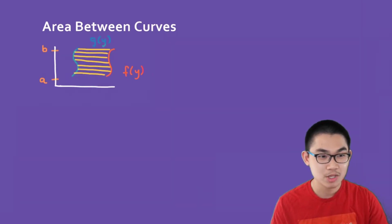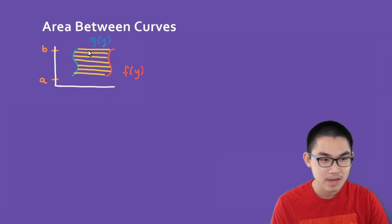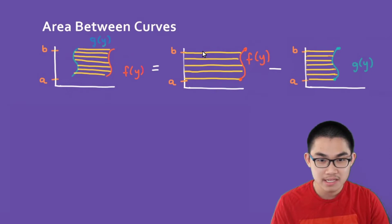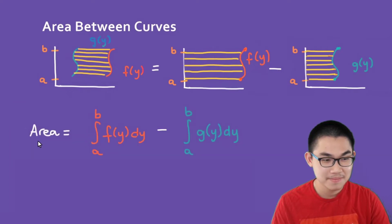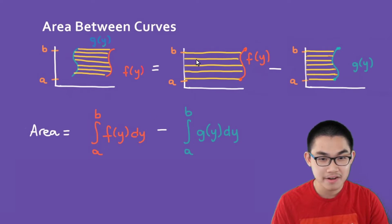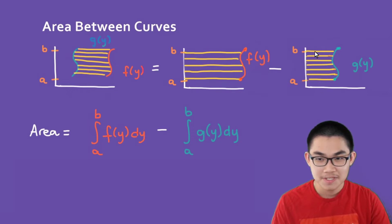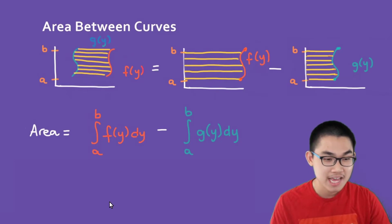Now let's take a look at how to integrate with respect to y. In this case, you have the function f of y and the function g of y, and you want to find the area between these two curves. You find the area with respect to y of f of y — that is the rightmost function — and you minus the area under g of y, the leftmost function. So the area is the integral from a to b of f of y dy, minus the integral from a to b of g of y dy. Smashing the two integrals together gives the integral from a to b of f of y minus g of y dy.